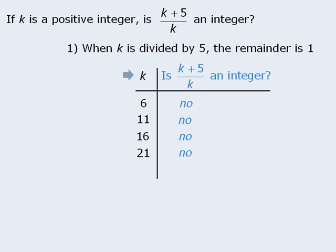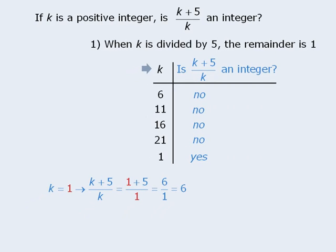However, we are forgetting an important value for k. If k divided by 5 gives a remainder of 1, then k could also equal 1, since 1 divided by 5 is 0 with a remainder of 1. If k equals 1, then (k + 5)/k simplifies to 6, and 6 is an integer — so the answer is yes. Now that we have two conflicting answers to the target question, we can be certain that statement 1 is insufficient.